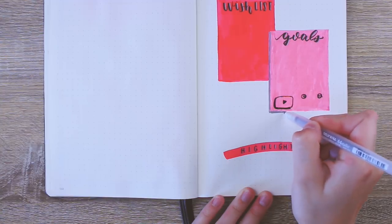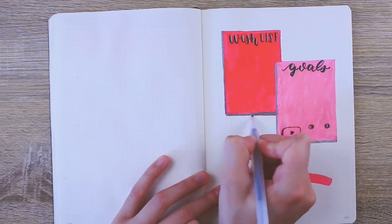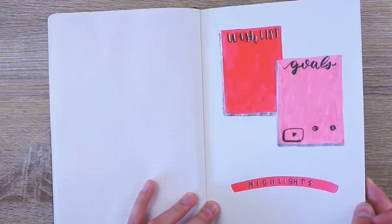I used this really cool silver metallic pen to do drop shadows on these boxes and you can see it really reflects the light when you move the page and I think it looks really, really cute.